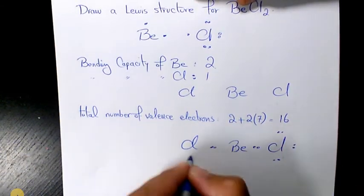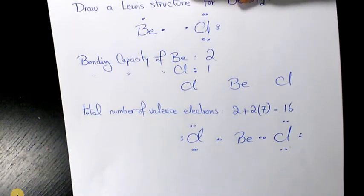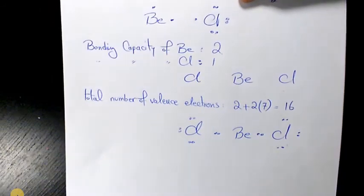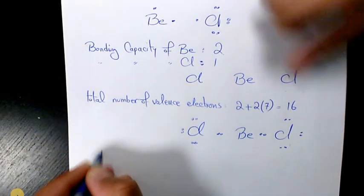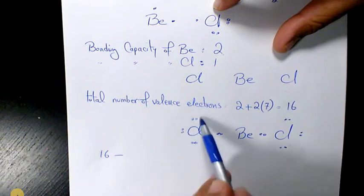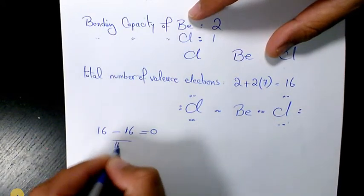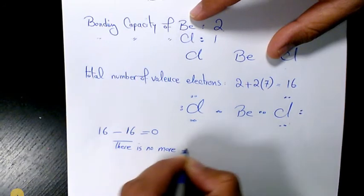The next step is to determine how many electrons are still available by subtracting the number of electrons used from the total valence electrons. We had 16, and now we have used 1, 2, 3, 4, 5, 6, 7, 8 pairs — 8 times 2 = 16. So 16 minus 16 equals zero — there are no more electrons available.